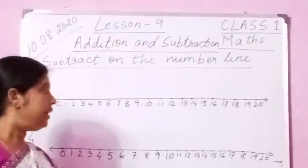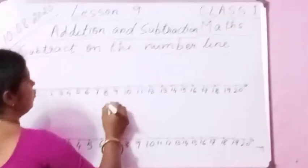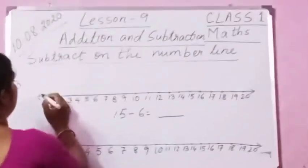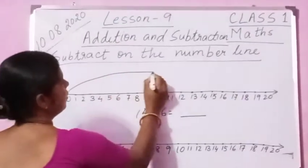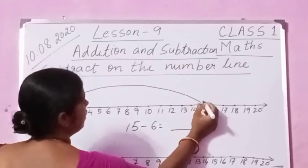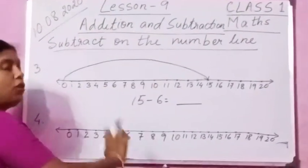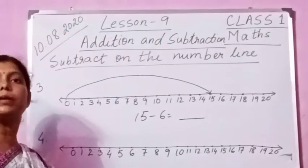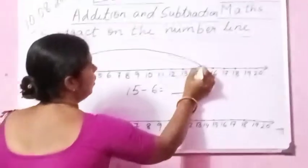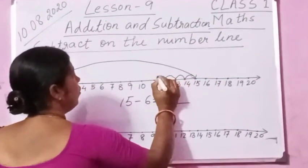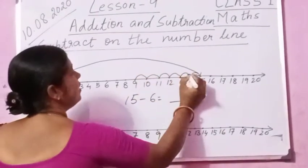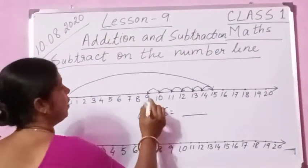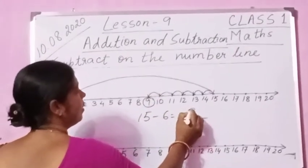Now you see number 3. It is 15 minus 6. So let us do on the number line 15 minus 6. We have to find out what is the number. Now let us take a jump from 0 to 15. From 0 to 15 we are taking our jump. We have to subtract 6 from 15. So now let us come back from here: 1, 2, 3, 4, 5, 6. 6 places we are coming back. 15 minus 6 — what is the number? 9.